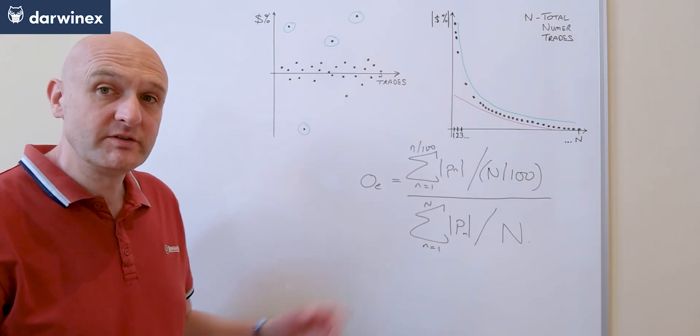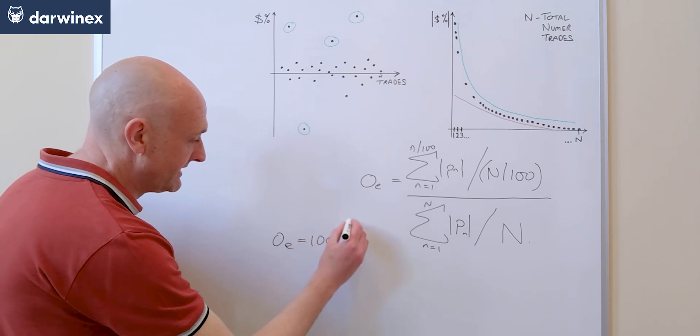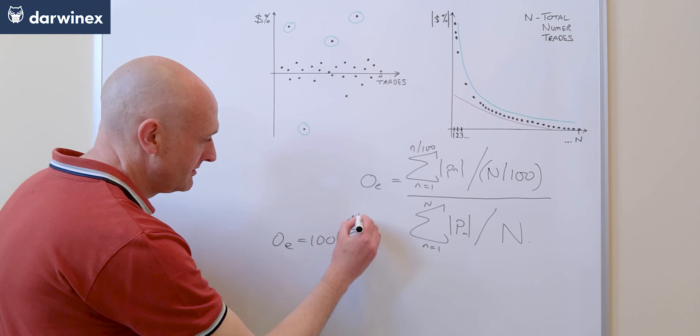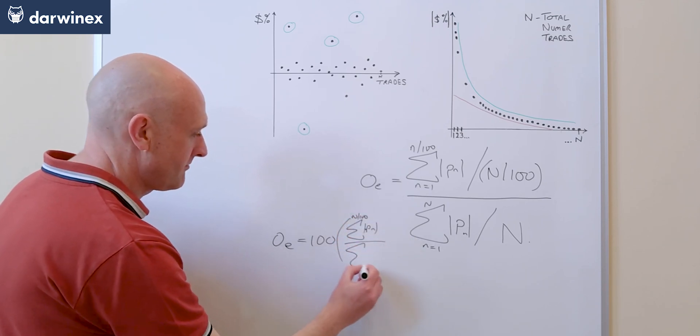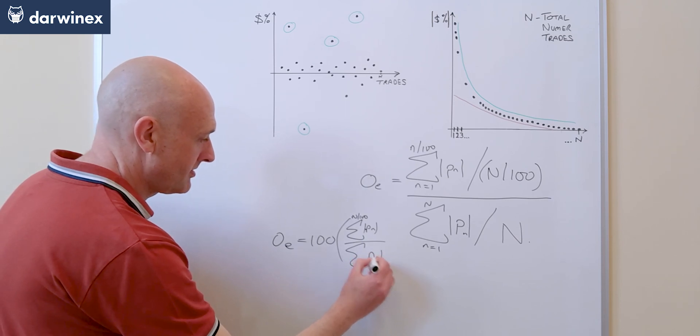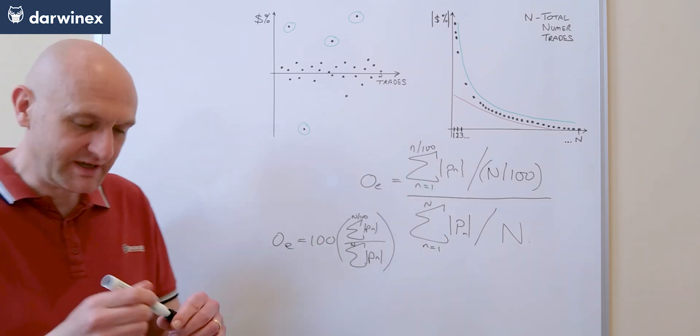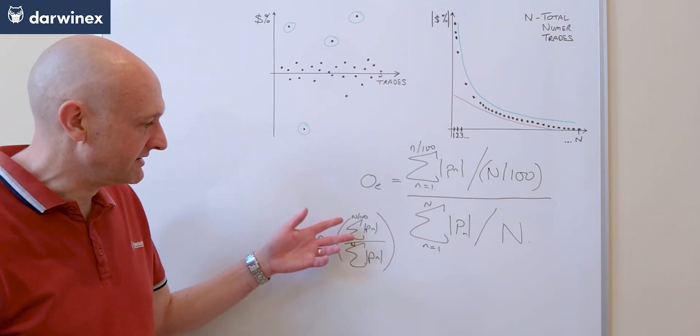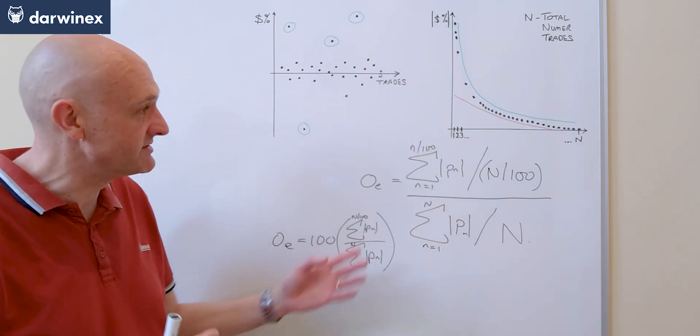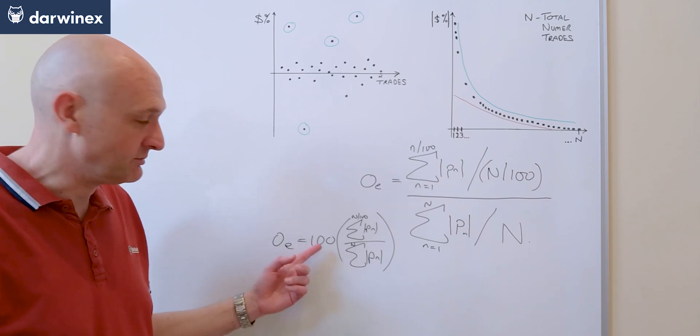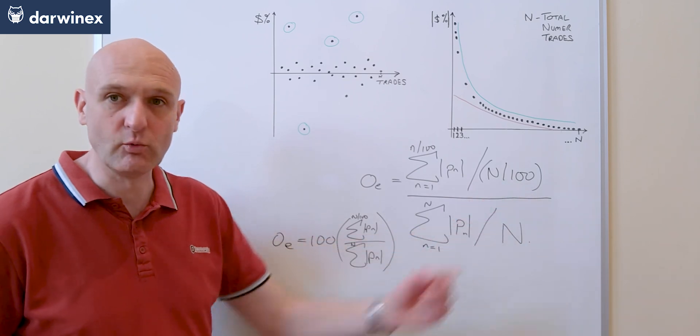Now this equation then simplifies down to give us this. And so this is what we can use to calculate our overfitting score. It's simply the sum of all of the magnitudes of the trades in the one percent divided by the sum of all the trades, and you multiply that by 100. The 100 of course comes from the fact that we're looking at one percent.